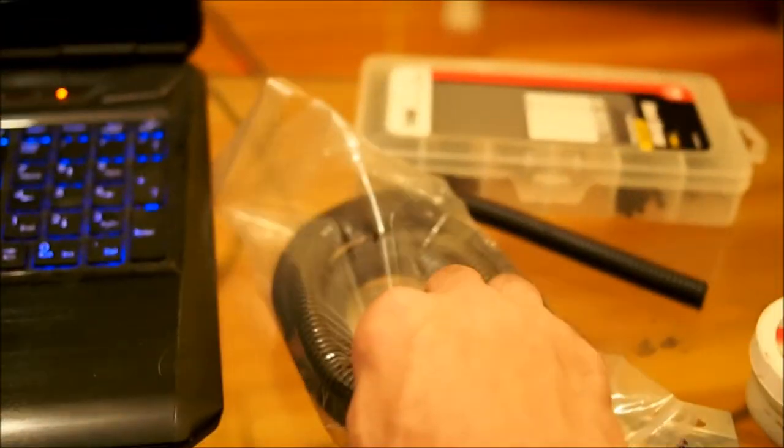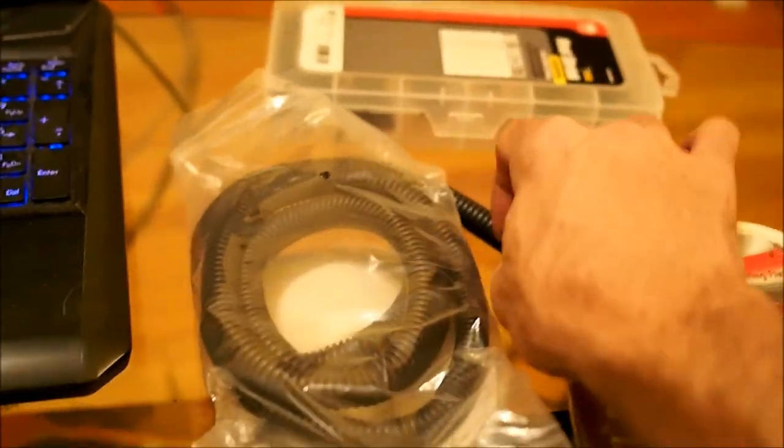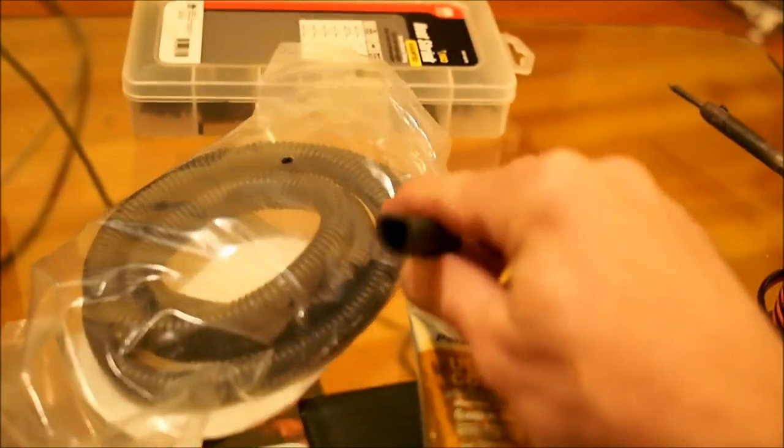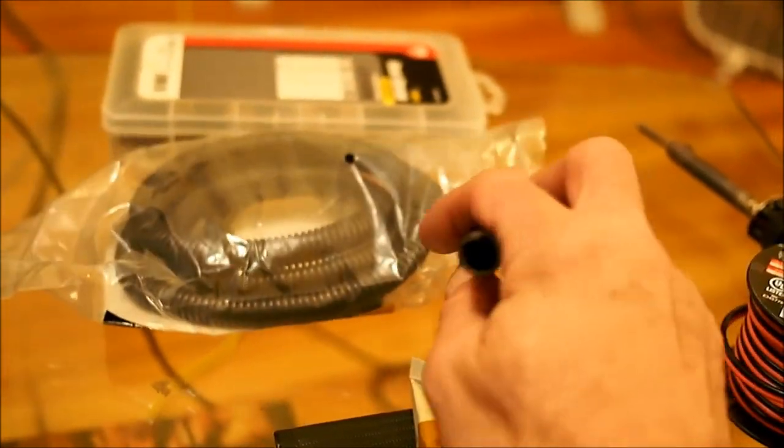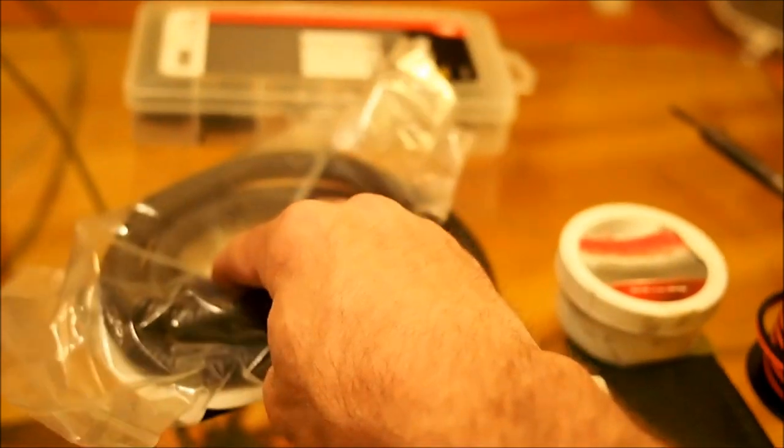And around that we found at the auto parts store this 3.8 inch or 10mm wire housing. So that's going to go around the whole thing, and it's supposed to be flame retardant as well.